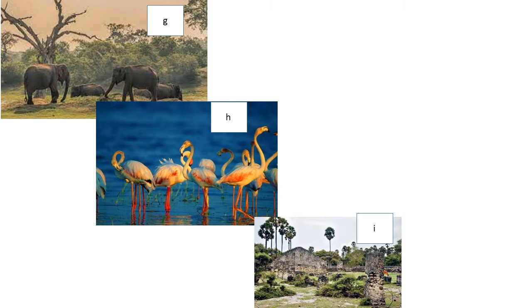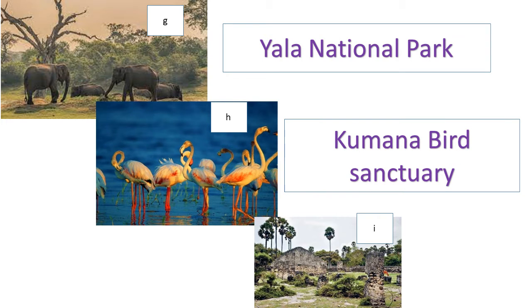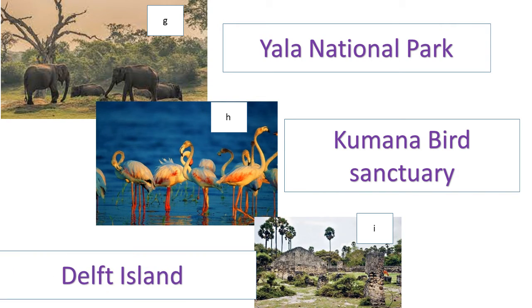Now three more pictures: G, H, and I. Picture G — elephants are there; it's a national park. Picture H — very beautiful birds; it's Kumana Bird Sanctuary. Picture I — you can see palmyra trees; you can find them in Jaffna. You can also see some ruins there.